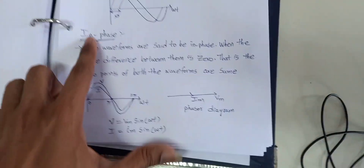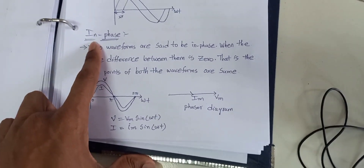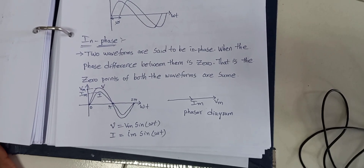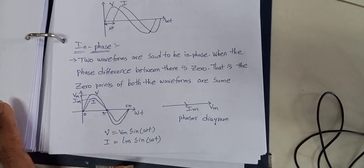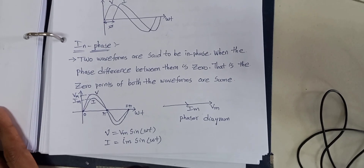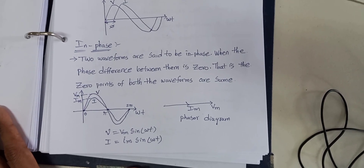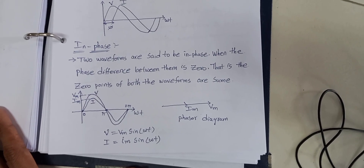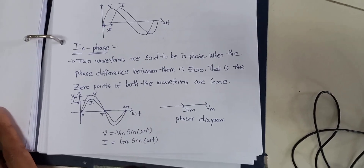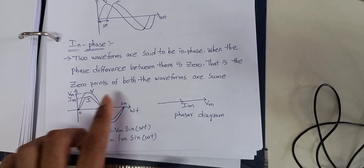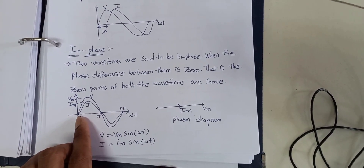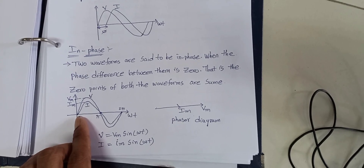Now we go for in phase. In phase will arise in a purely resistive load condition. What is the meaning of in phase? Two waveforms are said to be in phase when the phase difference between them is zero. It means there is no phase difference between voltage and current — both the voltage source and the current source start at the zero point only. The zero point of both waveforms is the same.